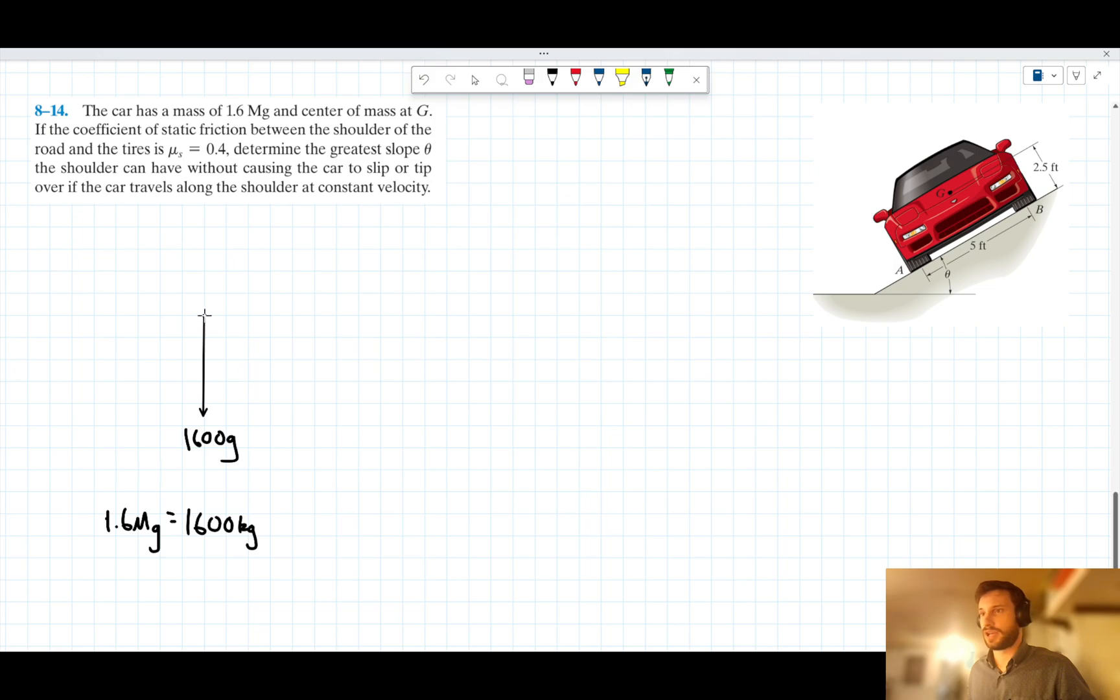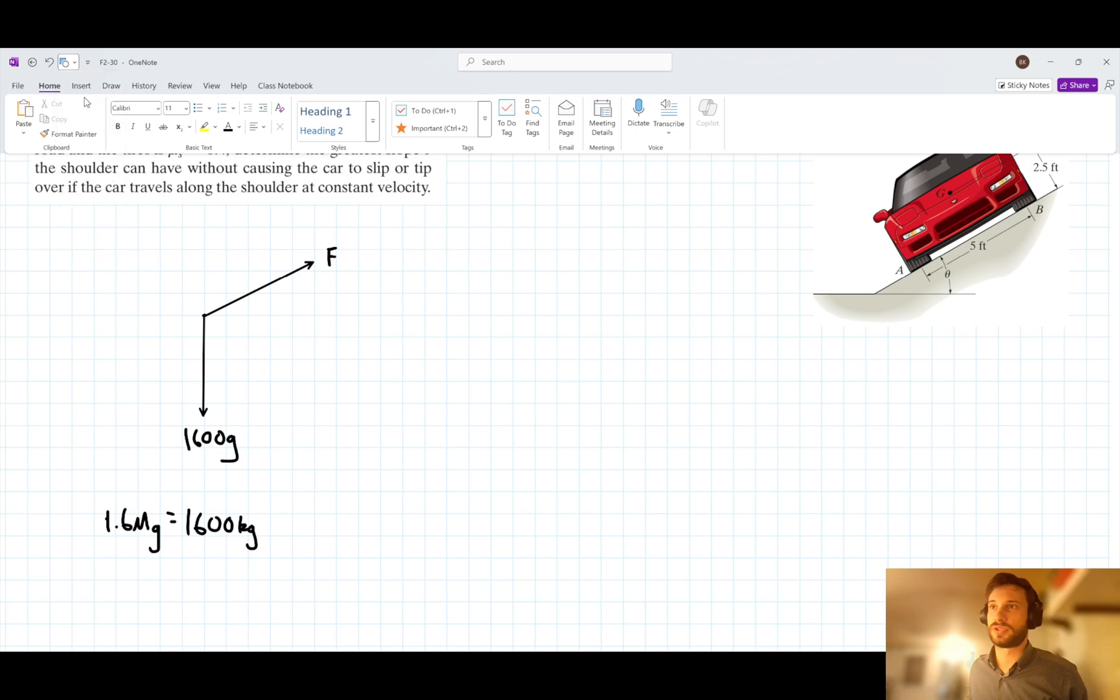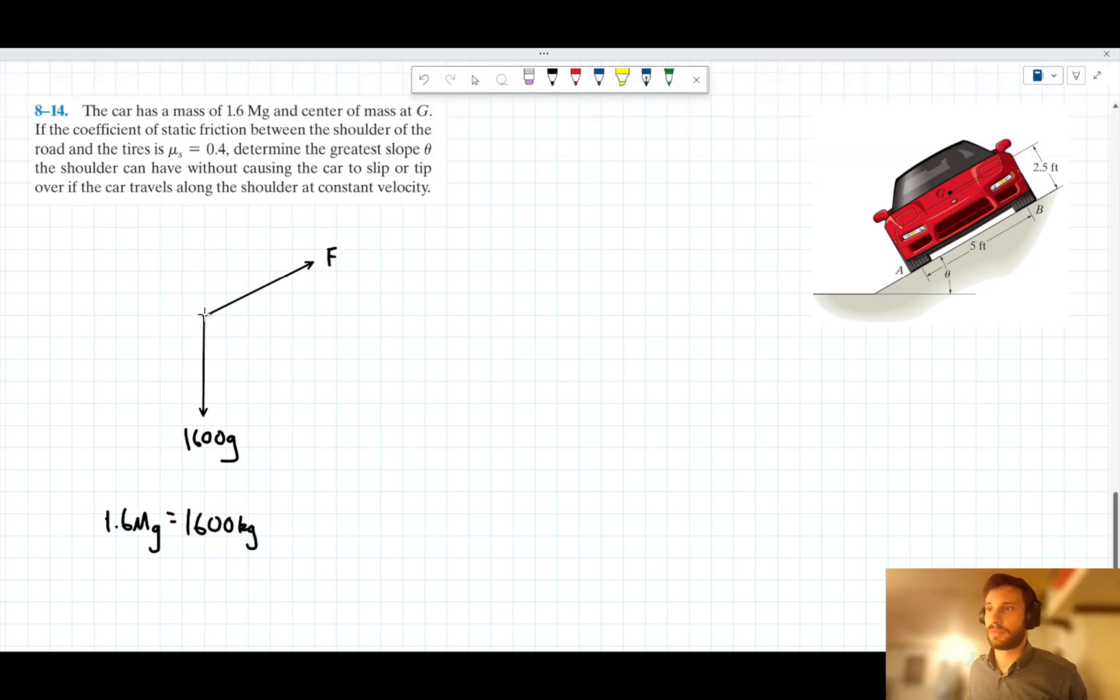What else is acting on the car? We've got the frictional force, let's call it F for now, which is acting parallel to the road. And we've got the normal force acting between the car and the road here. Let's call it N, which is acting perpendicular to the road here.